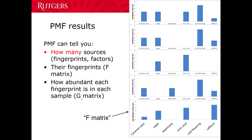What PMF can't tell you is what this means — you are the person who has to figure that out. You can look at these fingerprints and say: caramel color, sugar, cola flavoring, and caffeine — that must be Coke. Here's a fingerprint that's very similar but also has some citric acid — maybe that's Cherry Coke. Here we have nothing but sugar and citric acid — that's probably Sprite or 7-Up. Caramel color, artificial sweetener, cola flavoring, and caffeine — that's Diet Coke. And caramel color, sugar, some citric acid, and a ton of caffeine — that's probably something like Mountain Dew.